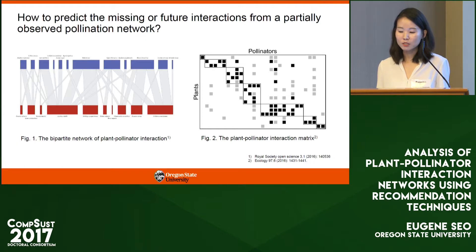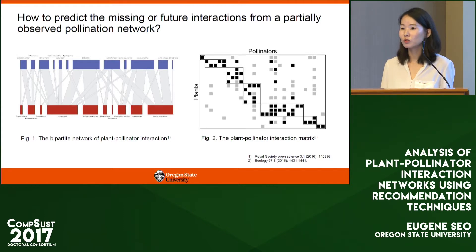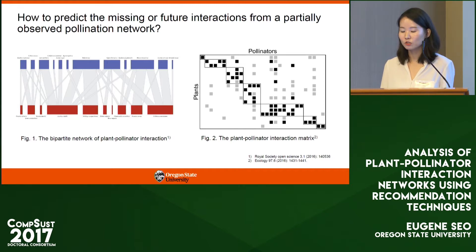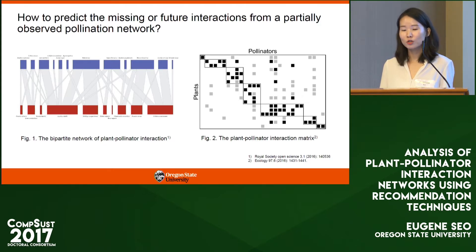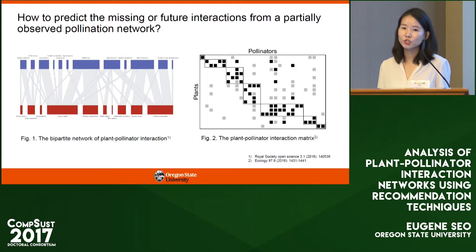Therefore, the missing link and the empty cell in the matrix does not necessarily mean no interaction between species. It can be a missing or undetected interaction caused by sampling effects. This problem could lead to incorrect conclusions in network analysis and can result in wrong predictions and decisions for the dynamic change of the pollinator networks.